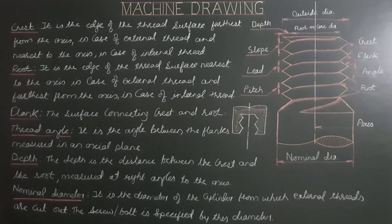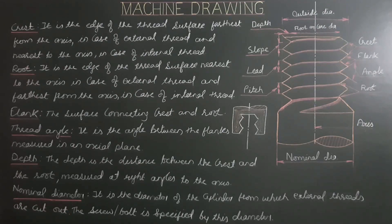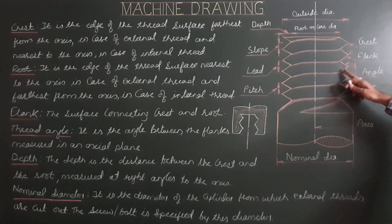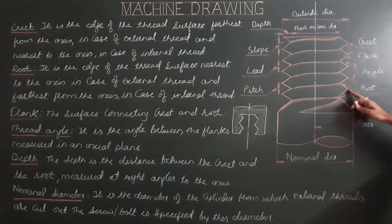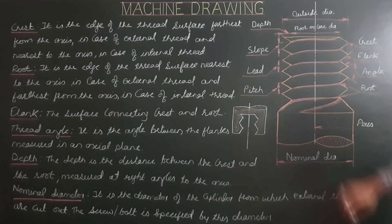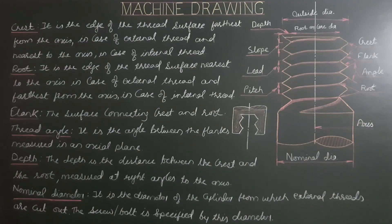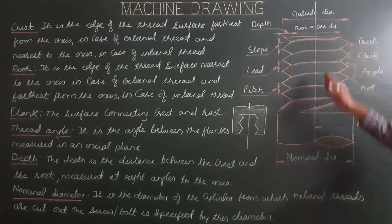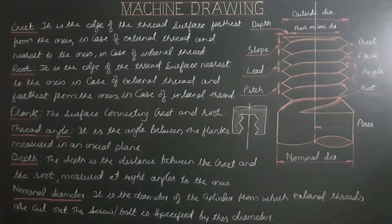Thread angle is the angle between flanks, measured in an axial plane. An axial plane is an imaginary plane passing through the central or solid axis of the screw.